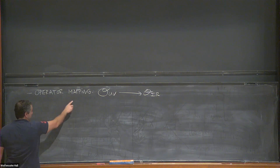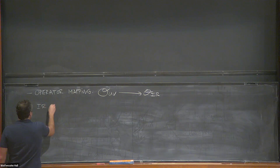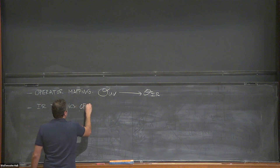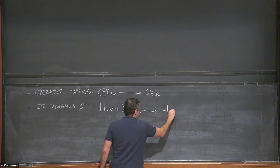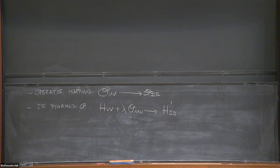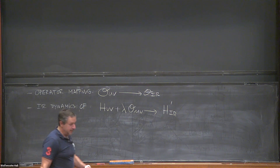You would want to identify which topological field theory describes the infrared, understand the operator mapping—whether a given UV operator decouples or survives as an operator in the infrared CFT or TQFT—and finally, ask what happens to the infrared dynamics when you deform the Hamiltonian by a particular UV operator. Depending on how quickly we go, we will see aspects of all these questions addressed in various degrees depending on the spacetime dimension.